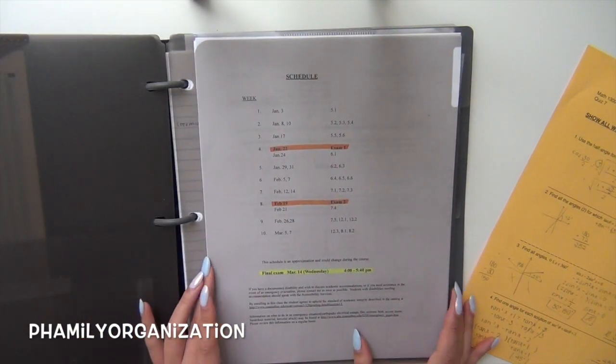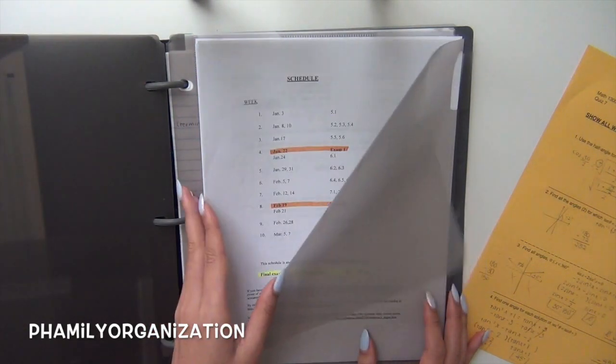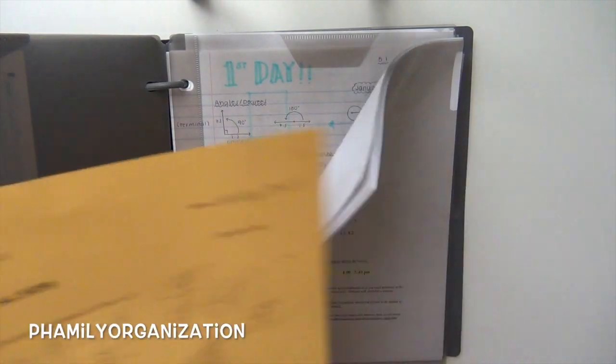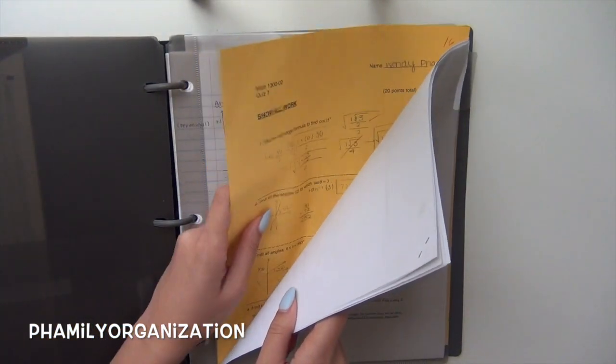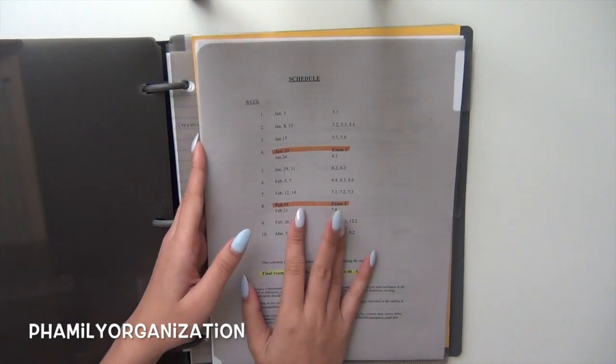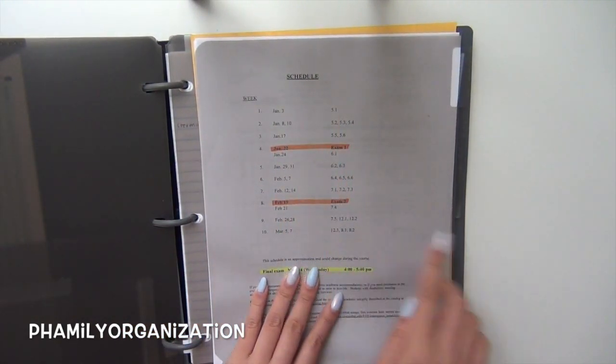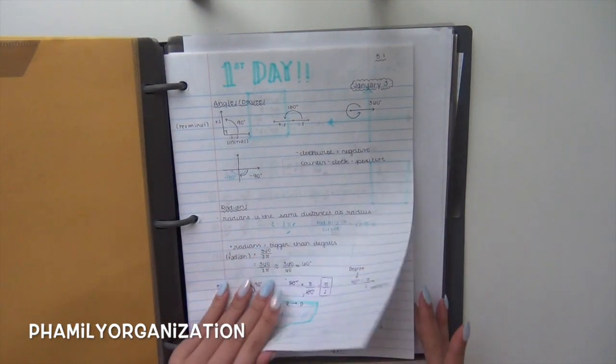This one was for my math and it has all the tests and stuff in order in the back. This is part of it. I just haven't put it back in there which I should. So I have all my tests and stuff and then I have the schedule in the front just so I know what I have to study and then here's my notes.